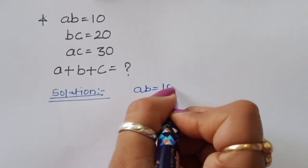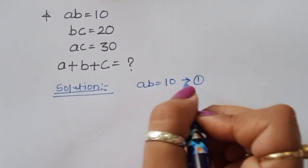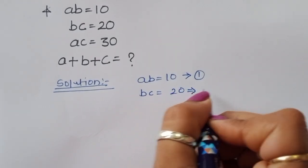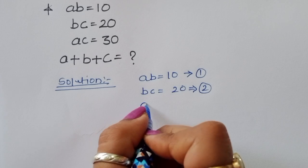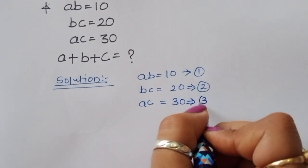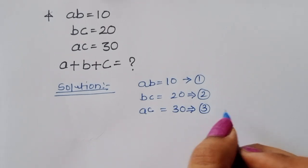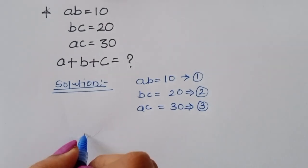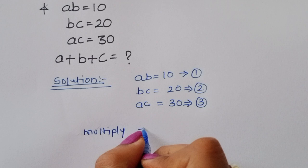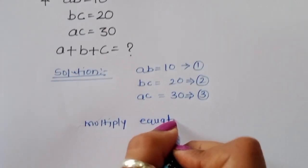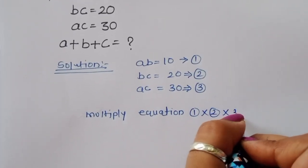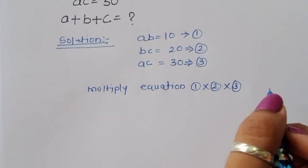AB is equal to 10, so this is equation number 1. BC equal to 20, equation number 2. AC equal to 30, this is equation number 3. Now we multiply equations 1, 2, and 3.